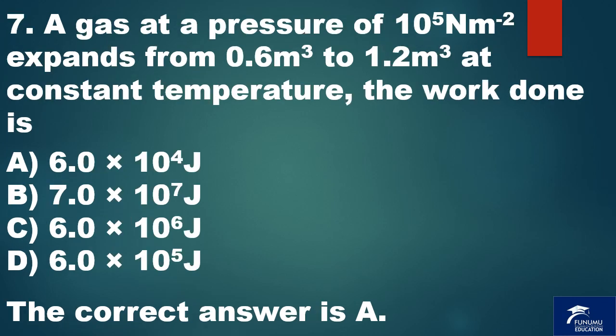Question 7. A gas at a pressure of 10 raised to power 5 Nm minus 2 square expands from 0.6 meter cube to 1.2 meter cube at constant temperature. The work done is A. 6.0 times 10 raised to 4 joules. B. 7.0 times 10 raised to 7 joules. C. 6.0 times 10 raised to 6 joules. D. 6.0 times 10 raised to 5 joules. The correct answer is A.